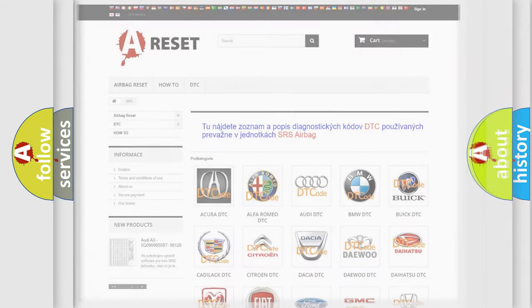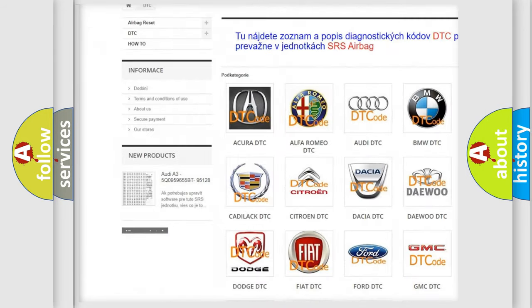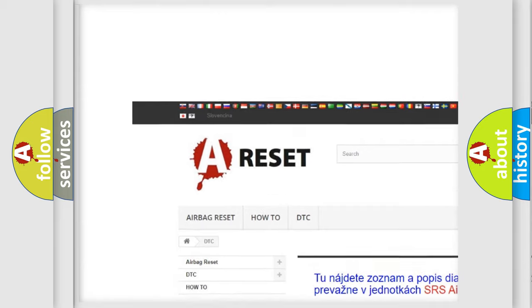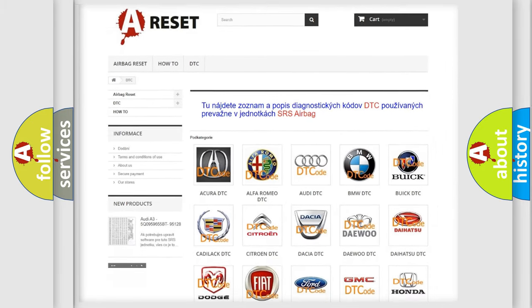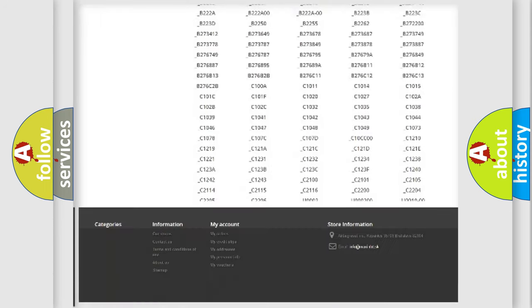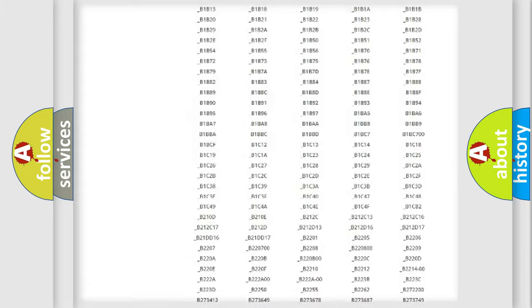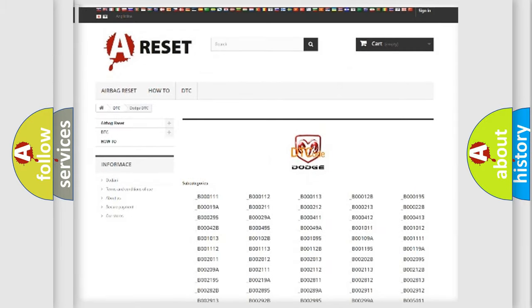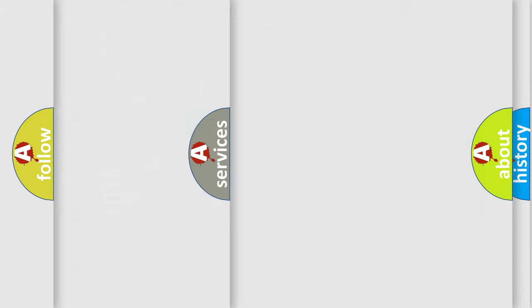Our website airbagreset.sk produces useful videos for you. You do not have to go through the OBD2 protocol anymore to know how to troubleshoot any car breakdown. You will find all the diagnostic codes that can be diagnosed in Dodge vehicles, also many other useful things.